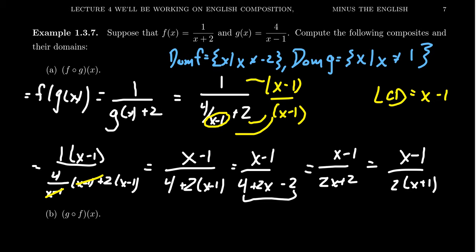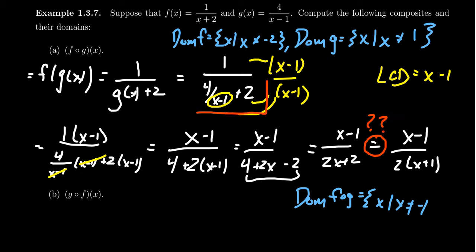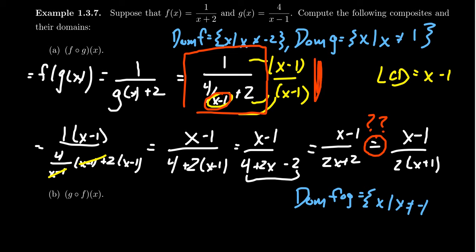When you put a rational function inside of a rational function, the result is itself a rational function. What can we say about the domain of this composite? Looking at the final simplified formula for f composed with g, we see x cannot equal negative 1, since that makes the denominator go to 0. But there's another problem as well. The simplified expression is not actually equal to the original nested expression for all x, because we can't let the denominator of the baby fraction go to 0 either. We simplified out the baby fractions, but those domain restrictions still apply.